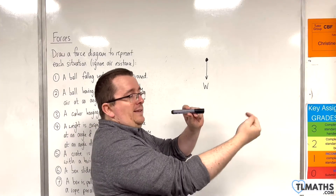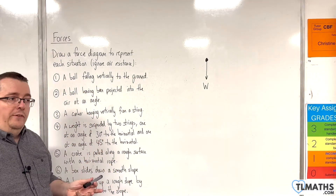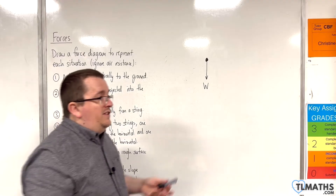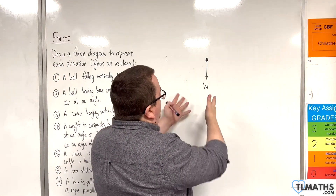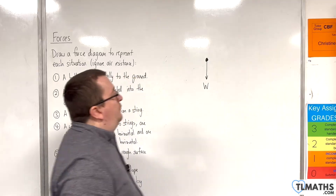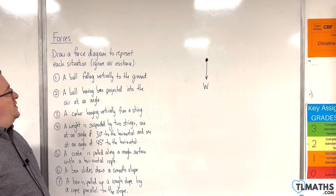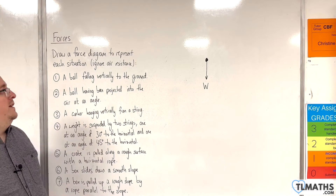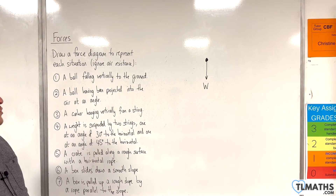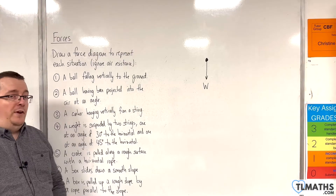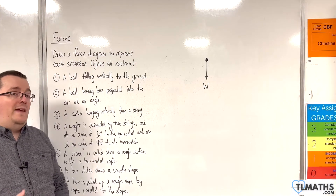There are no forces acting on it in that direction either, because there's no air resistance. There's nothing pushing it back up again. So this is the force diagram for number two as well — it doesn't matter if it's falling vertically or projected at an angle. The force diagram is the same: there's only one force acting on it, and that would be its weight.